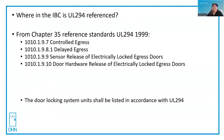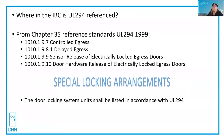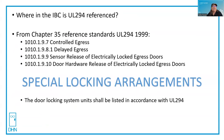What do these all four have in common? They're typically using some kind of a mag lock or an electrified lock that locks the door on the egress side. In other words, these are special locking arrangements. The door locking system units shall be listed in accordance with UL 294 — every one of these has that as a listed criteria, so the door locking system units are what needs to comply.